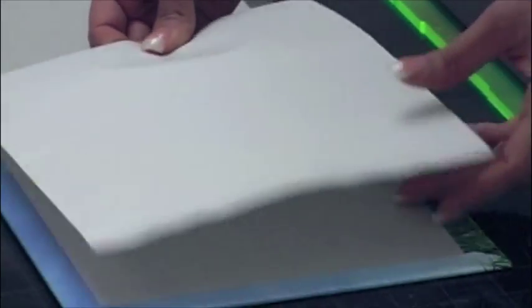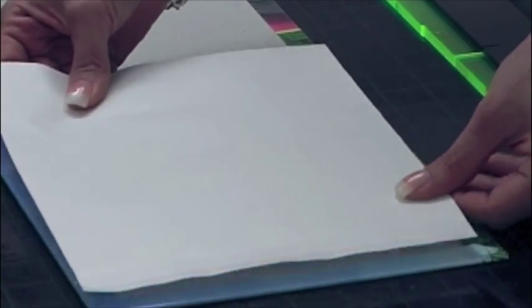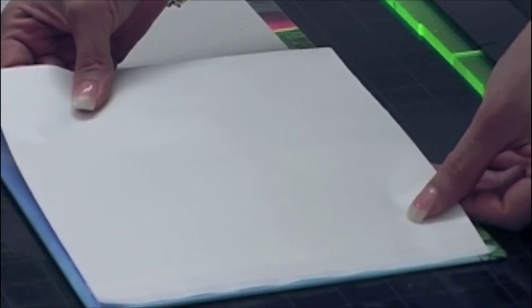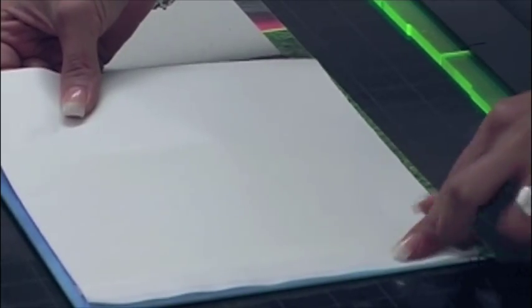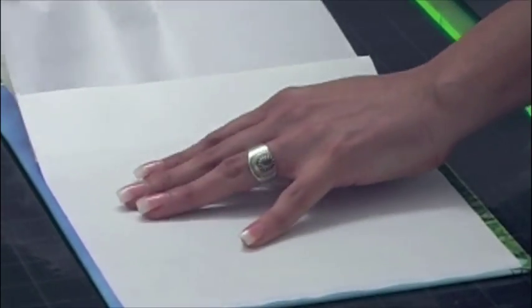Center and adhere the edge of the liner to the edge of the book. Peel back the release paper and smooth the liner to the inside of the cover.